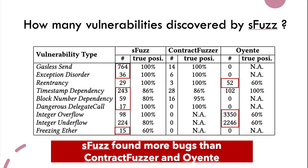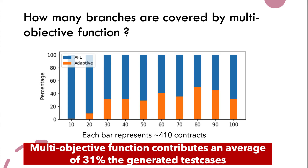The third research question: how many vulnerabilities are discovered by Sfuzz? We focus on 9 types of vulnerabilities shown in the table. Red rectangles indicate the highest number of bugs found. Sfuzz found more bugs than ContractFuzzer and Oyente, except for reentrancy and integer overflow/underflow. However, in those cases, Oyente has low true positive precision.